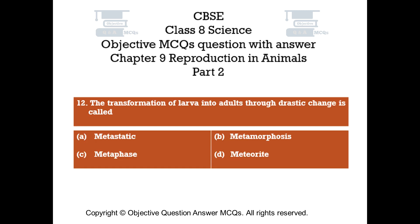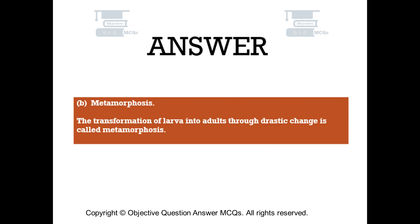Question number 12. The transformation of larva into adults through drastic change is called. Option A: Metastatic. Option B: Metamorphosis. Option C: Metaphase. Option D: Meteorite. The right answer is Option B: Metamorphosis. The transformation of larva into adults through drastic change is called metamorphosis.